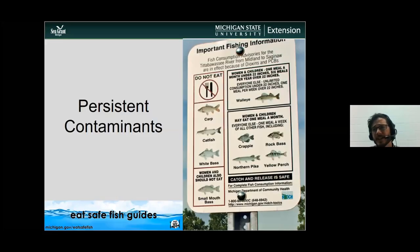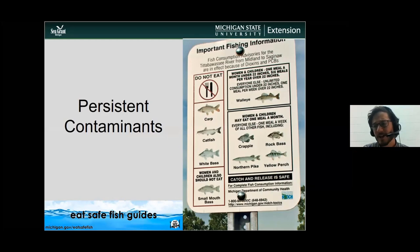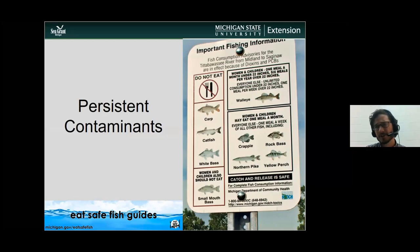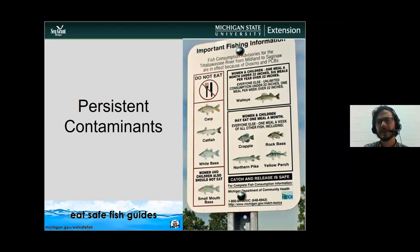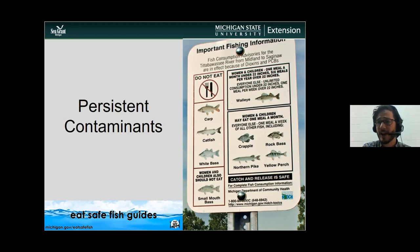Moving on to persistent contaminants — there are many different ones. We typically get exposed to them by eating, drinking, or breathing them in. In terms of water quality, we're exposed when we eat fish. Persistent contaminants stay around in the environment for a long time, can be easily transported throughout a landscape, and can bioaccumulate in different organisms. Little organisms get exposed, are eaten by larger organisms, and eventually the big predator fish in the system may have quite a bit of that contaminant. This is why we have our 'Eat Safe Fish' guidelines.